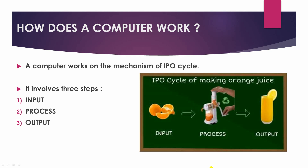Next is how does a computer work? A computer works on the mechanism of the IPO cycle. IPO means input, process, output. It involves three steps: input, process, and output.